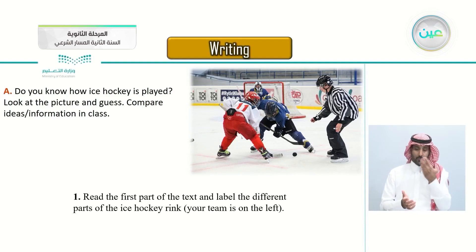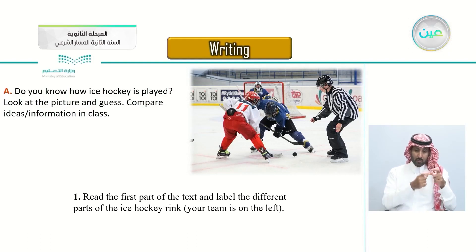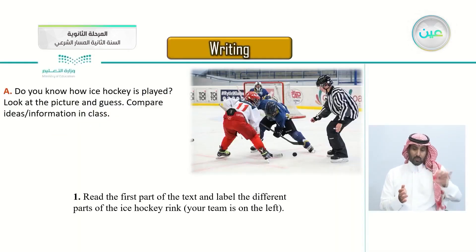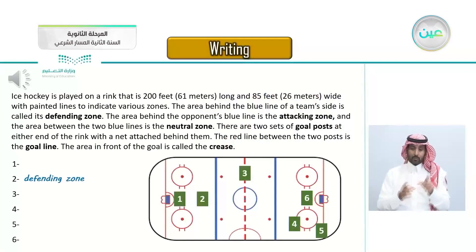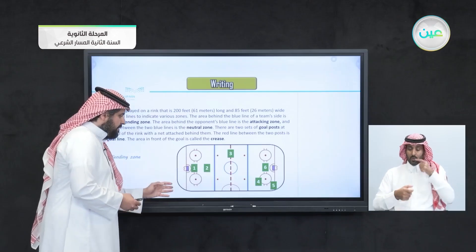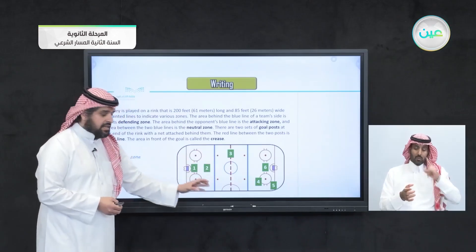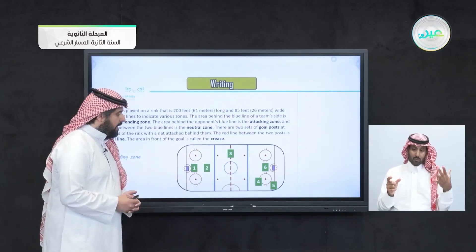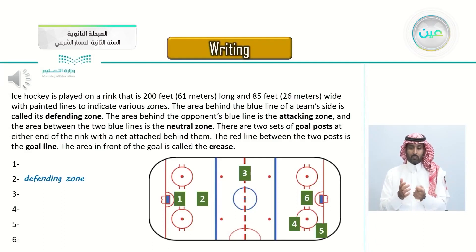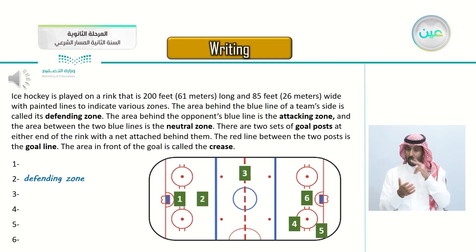Number one: read the first part of the text and label the different parts of the ice hockey rink. Your team is on the left. You can see this is the ice hockey rink, and you have the positions of the players here — one, two, three, four, five, and six. We'll be writing each of the positions from the first paragraph. Let's listen to it together.